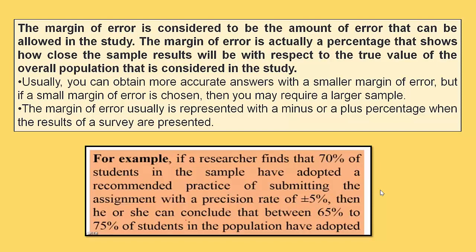For example, if customer satisfaction is 50% with a margin of error of plus/minus 3%, that means the customer satisfaction will be in the range of 47% to 53%. On the slide, there is another example: if the researcher finds 70% of students in the sample have adopted the recommended practice of submitting assignments, with a precision rate of plus/minus 5%, then acceptance will be between 65% to 75%.